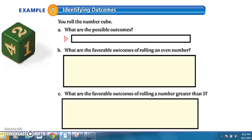Let's look at an example. Suppose I have a number cube. What are the possible outcomes of the number cube? What could happen? Well, I could roll a one, a two, three, four, five, or a six. So there are six possible outcomes.